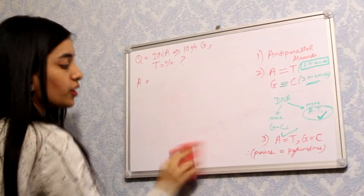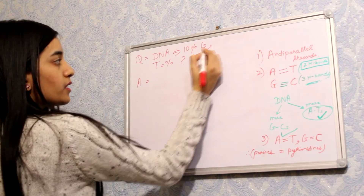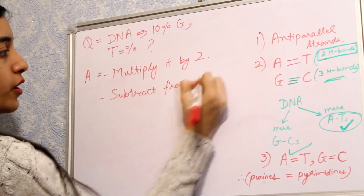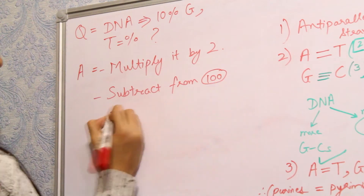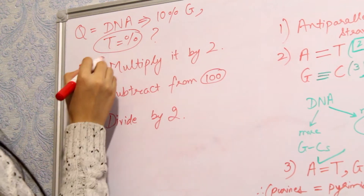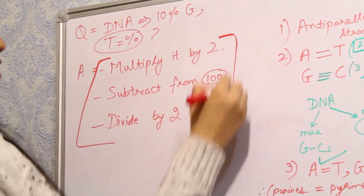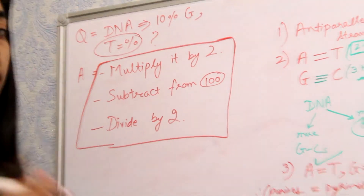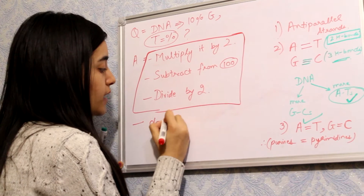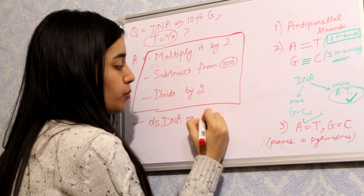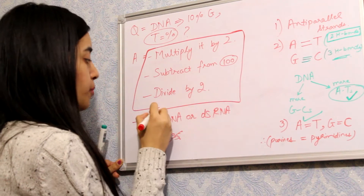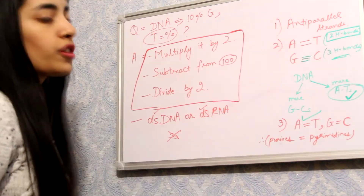Here is a shortcut: if the percentage of one base is given, multiply it by 2, subtract the answer from 100, then divide by 2 — and you get the percentage of the complementary base. Also note that Chargaff's rule is only applicable to double-stranded DNA or double-stranded RNA; it is not applicable to single-stranded molecules.